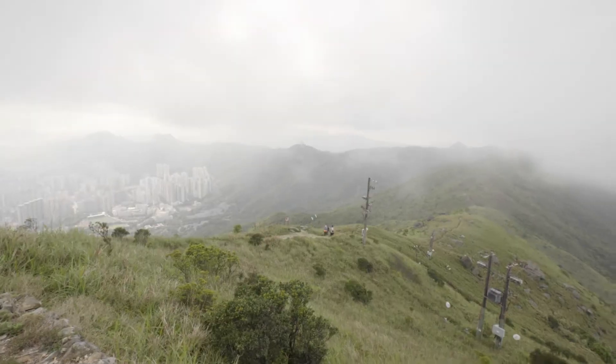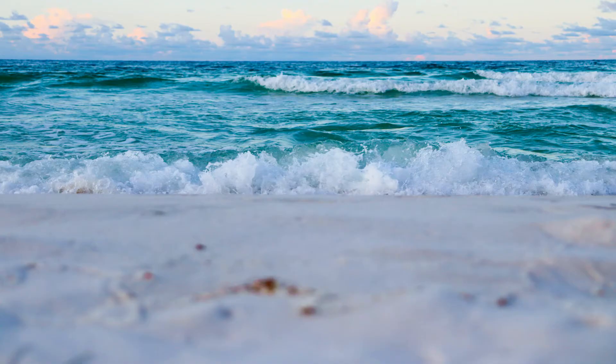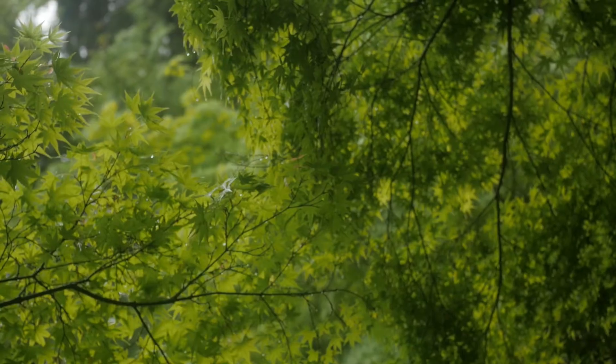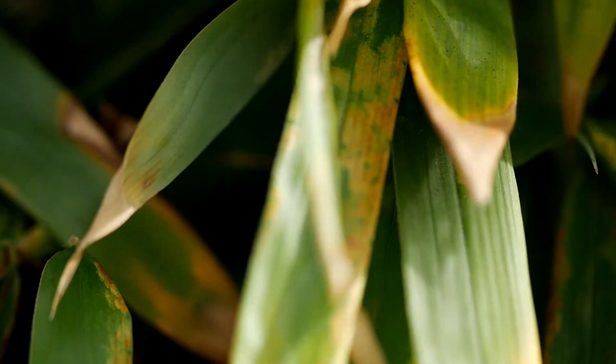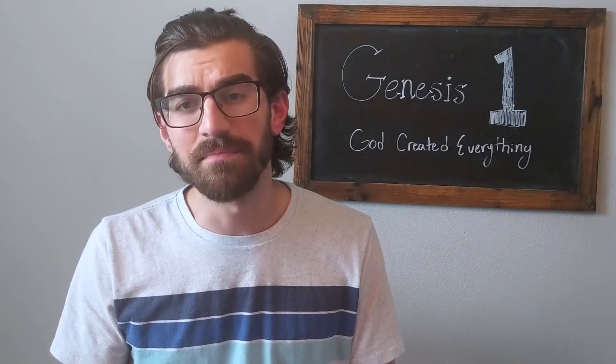Then God said, 'Let the waters below the heavens be gathered into one place, and let the dry land appear.' God called the dry land earth, and the gathered waters sea. God saw that it was good. Then God said, 'Let the earth sprout trees and plants that bear fruits and seeds.' And God saw that it was good. Evening came, and then morning — the third day.